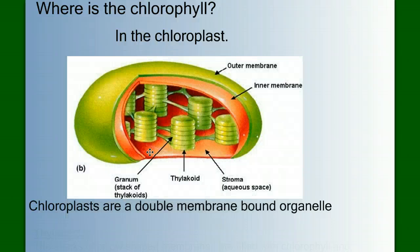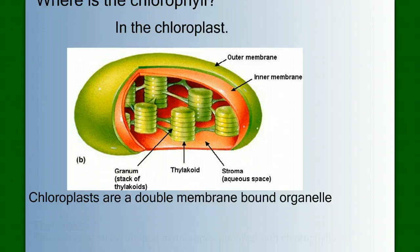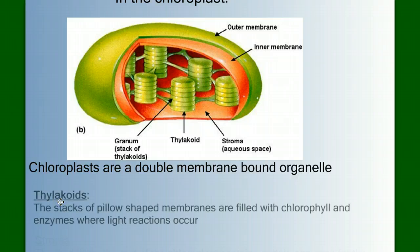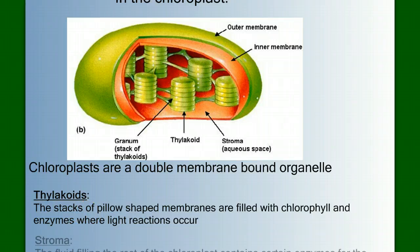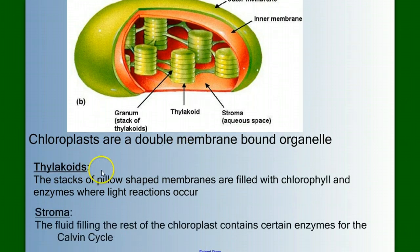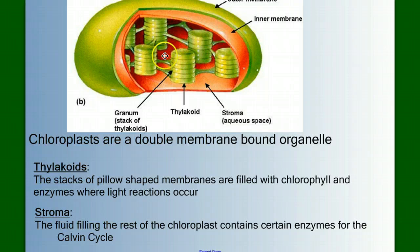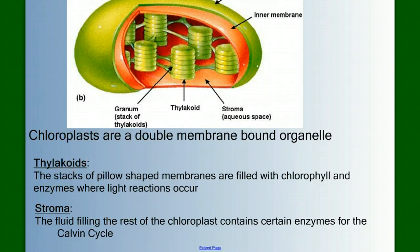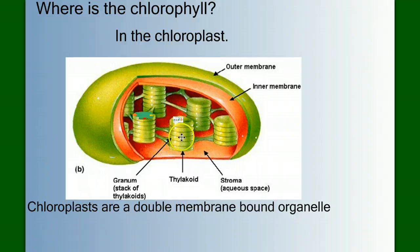Let's look at the structure of a chloroplast. A chloroplast is a double membrane-bound organelle — it has an outer membrane and an inner membrane. Inside the chloroplast, we have a system of stacks of membranes called thylakoid membranes. The thylakoid membranes are where the light reactions are going to occur. Surrounding these stacks of thylakoids is a liquid area called the stroma, which contains the enzymes that run the Calvin cycle. So the two sets of reactions — light reactions and the Calvin cycle — correspond to these two distinct regions: the thylakoid and the stroma.